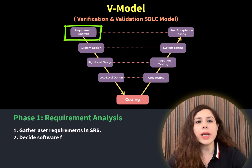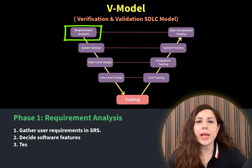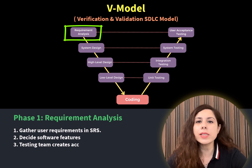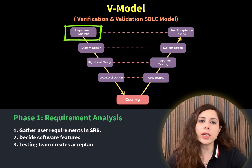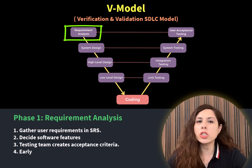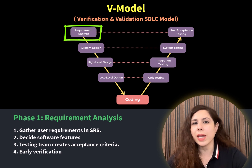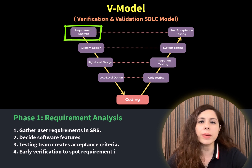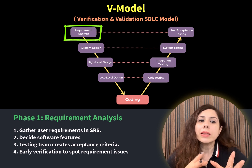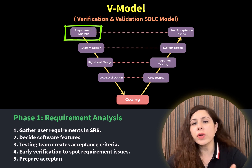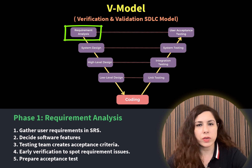Imagine we are developing an appointment scheduling app for a big hospital chain. In this phase, we decide on different features: users need to select doctors, choose dates, and confirm appointments. These requirements are drafted in the Software Requirement Specification, also known as SRS.